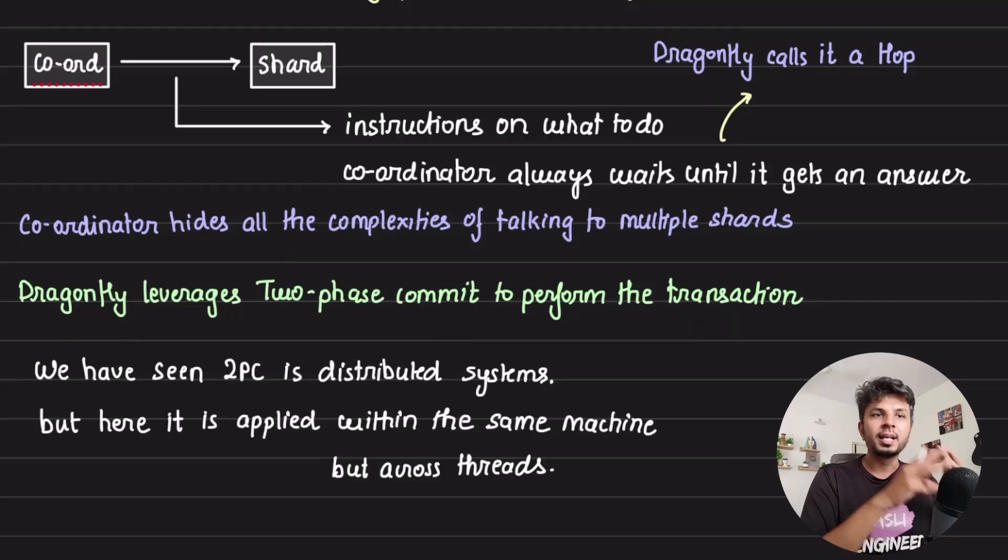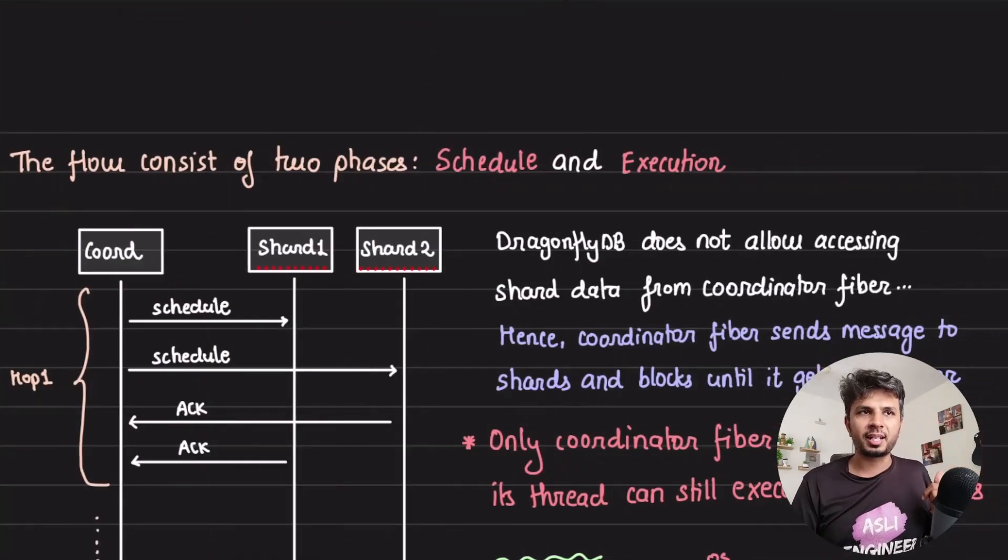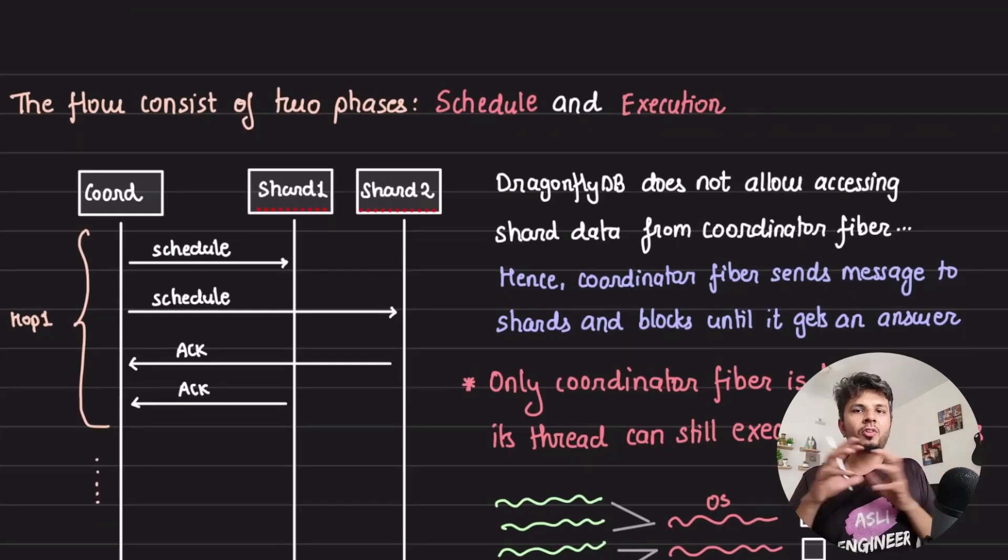DragonflyDB leverages two-phase commit to perform the transaction. You would have heard of two-phase commit in the context of distributed systems. I already have a bunch of videos on that, on how it is actually implemented with code. But this is where it's not happening across multiple machines, but across multiple threads in the same machine, because there is one-to-one correspondence between them. Let's see what the two phases are. The two phases of DragonflyDB transactions are schedule and execution.